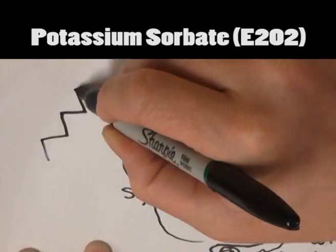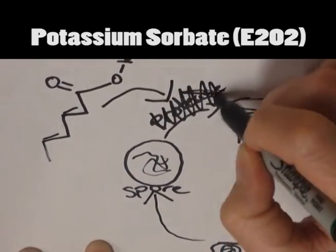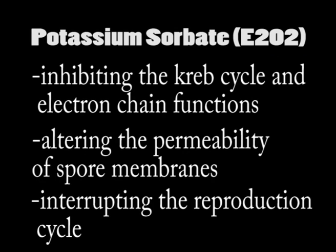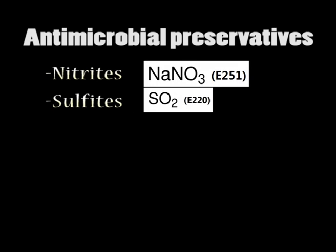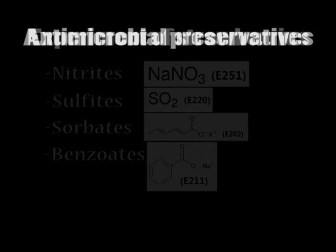In addition, sorbate inhibits protease enzymes which are essential for the spore's germination. These mechanisms in turn cease the growth of moulds, yeast and bacteria. Although this is just one antimicrobial preservative, there are a variety of preservatives that inhibit the growth of microorganisms in different ways, and these are often used in conjunction with one another to eliminate or minimise risk of microbial spoilage.